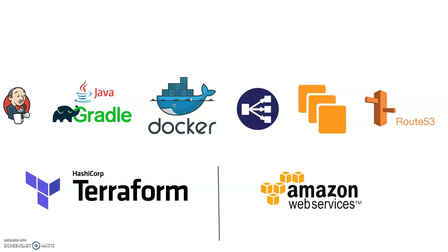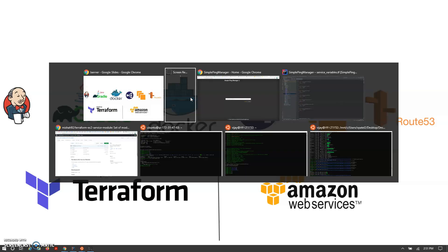Let's understand what tools we are going to use in this project. We are going to use Jenkins and Java — the microservice is Java-based. Using Gradle, we will build the project and build it into a Docker container, which will be pushed to Docker Hub. On the AWS side, we use EC2, load balancing, Route 53, and Certificate Manager. We use Terraform to create our complete infrastructure on AWS.